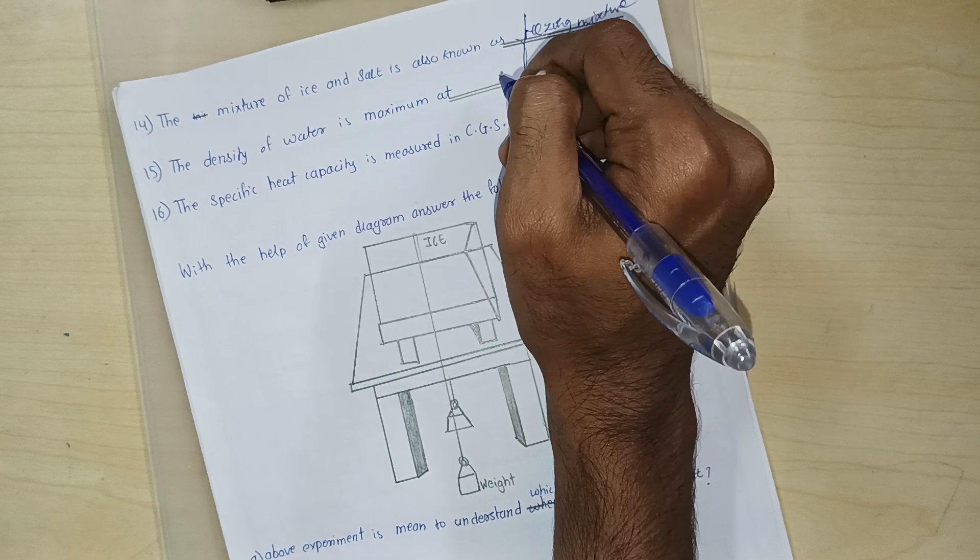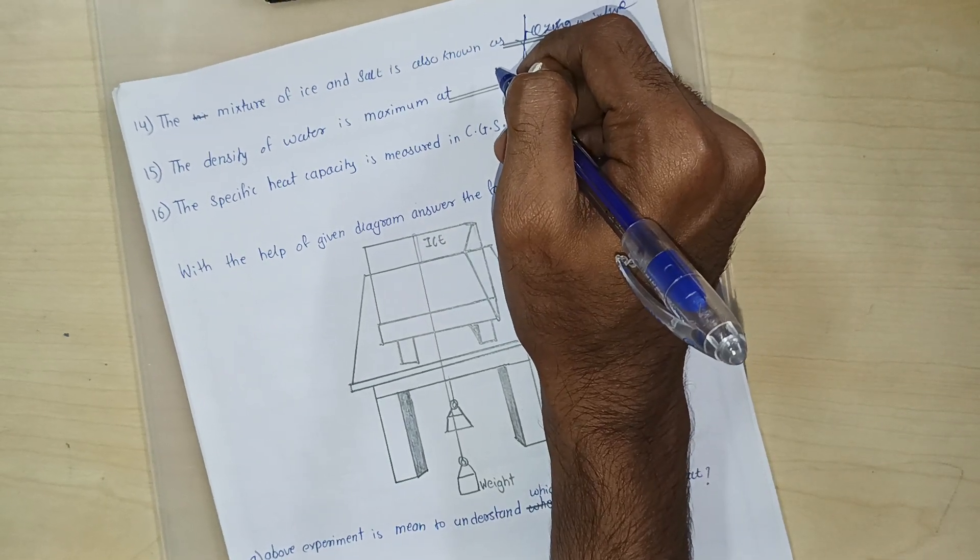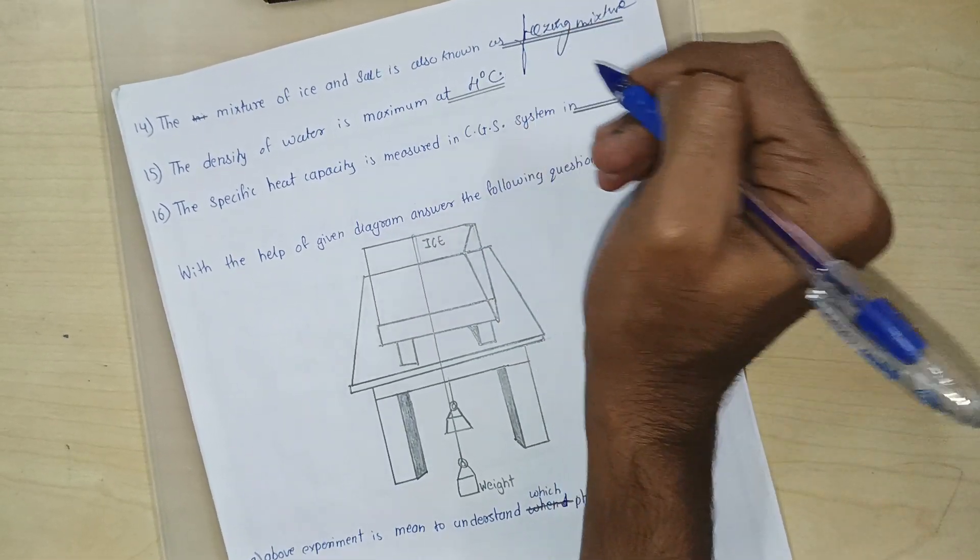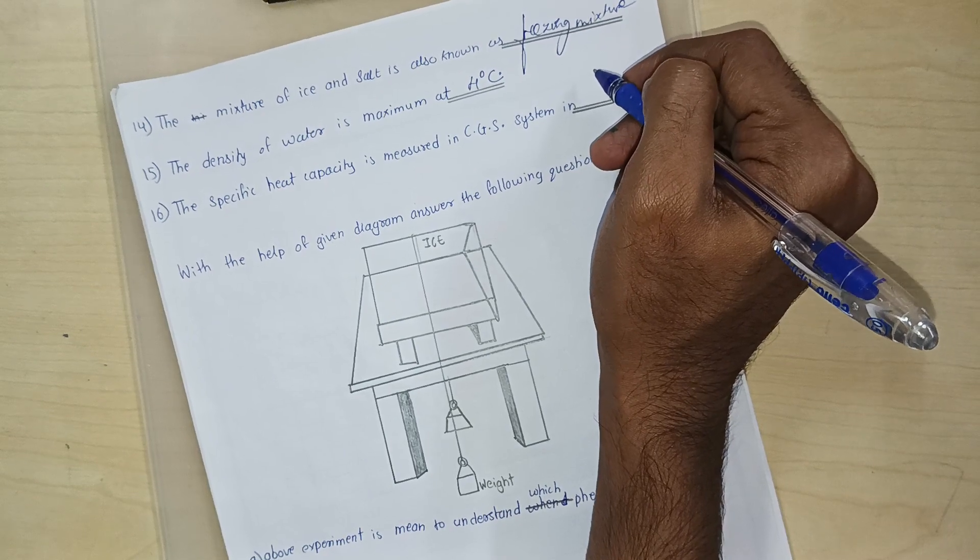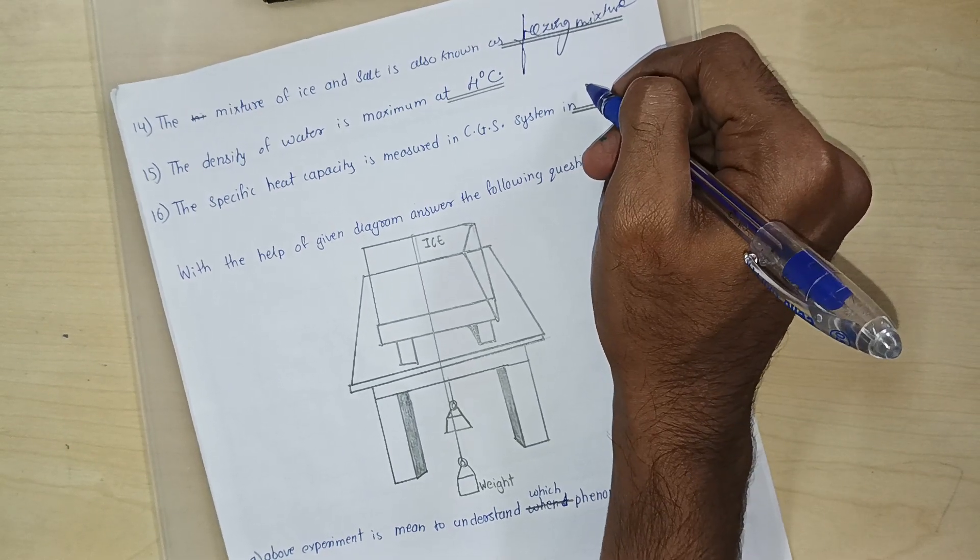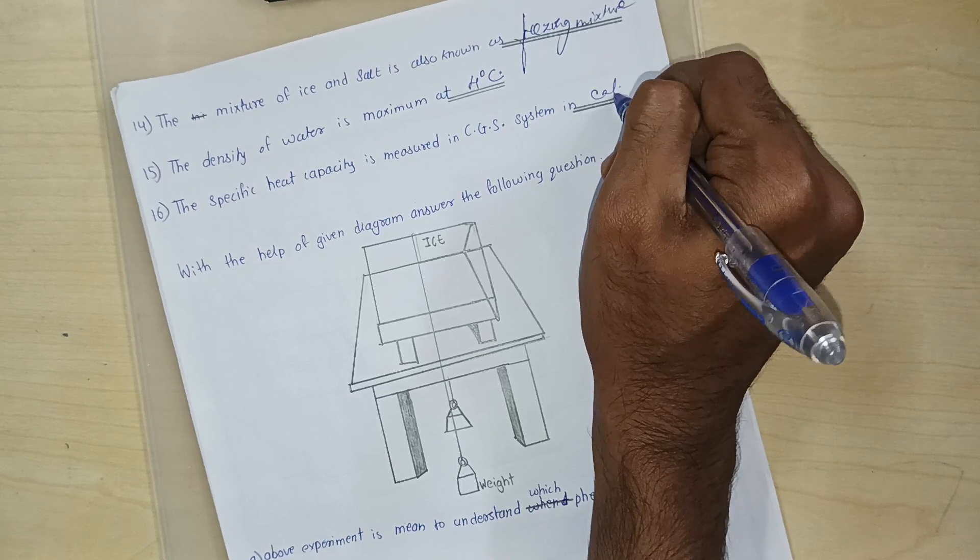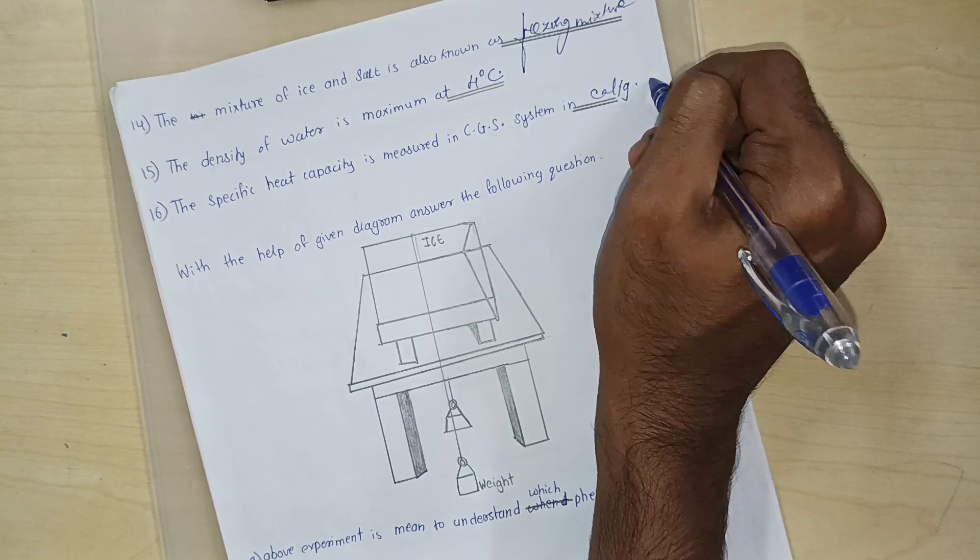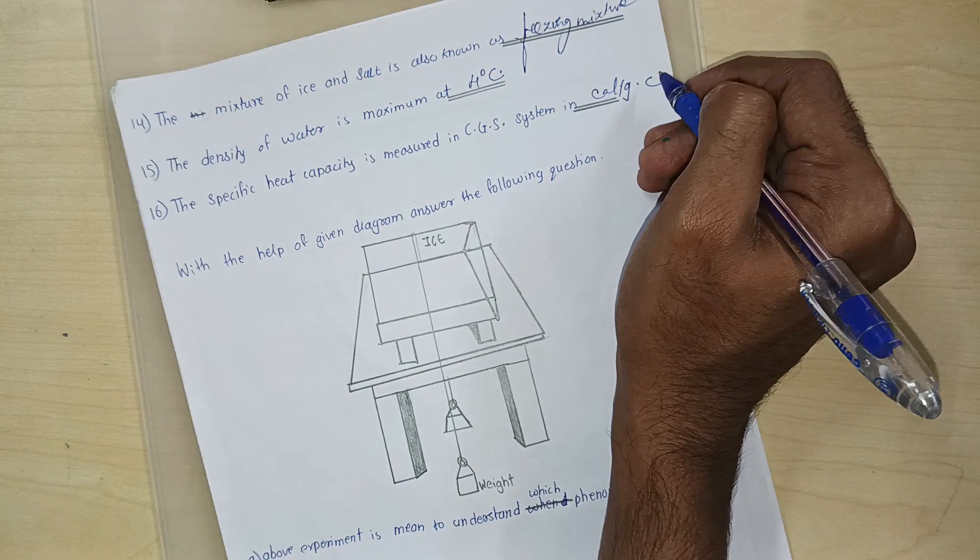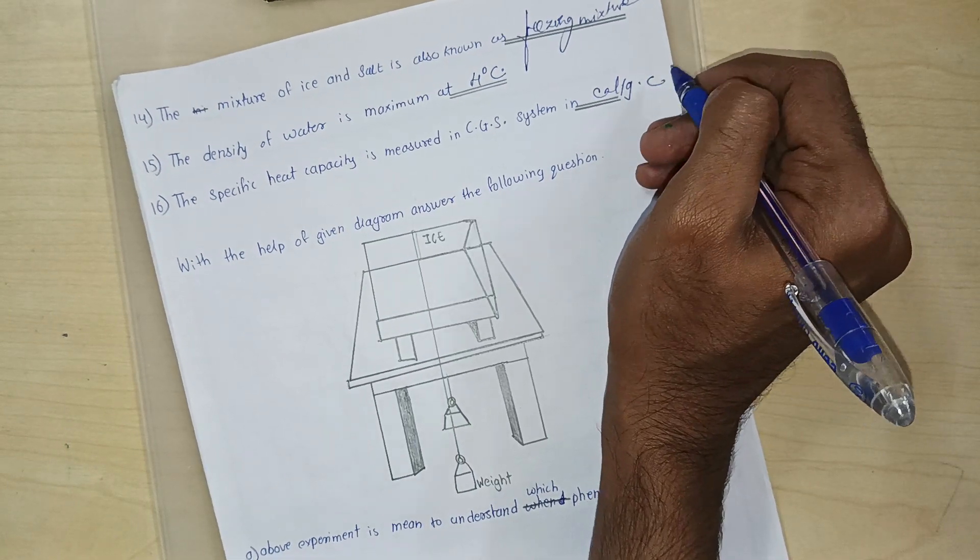The density of water is maximum at 4 degree Celsius. The specific heat capacity is measured in CGS unit is called what is it called? Calorie per gram degree Celsius.